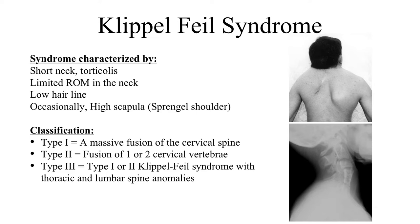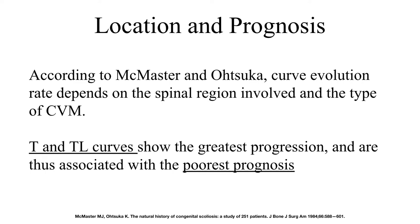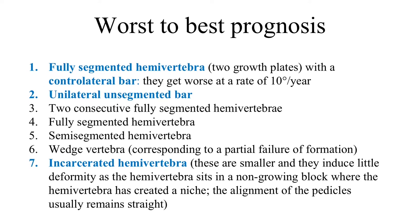Klippel-Feil syndrome is characterized by short neck, limited range of motion in the neck, torticollis, low hairline, and may also have congenital high scapula or Sprengel's shoulder. These vertebral anomalies can be in the form of massive fusion of the cervical spine, or limited and multiple fusions in the cervical, thoracic, and lumbar spine. The problem with cervical fusions is that there are always areas of hypermobility above the fusion, which may cause cord myelopathy and weakness. According to MacMaster, vertebral malformations located in the thoracic and thoracolumbar curves have the greatest progression and are associated with the poorest prognosis.